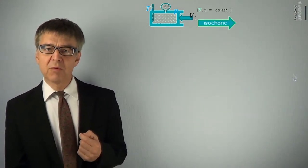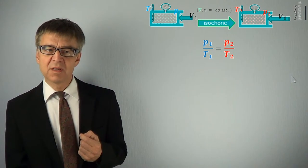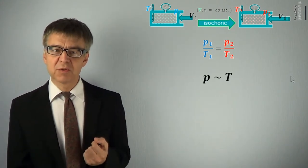We observe similar behavior for changing the pressure at constant volume. The pressure is proportional to temperature in K for isochoric heating. This is the so-called Charles law. P over T is constant. P is proportional to T.